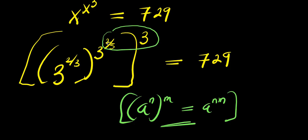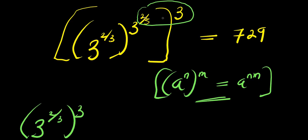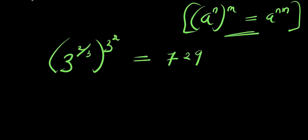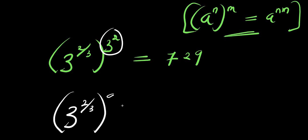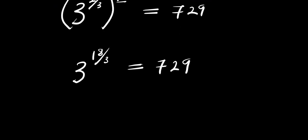Multiplying out: 3 times 2 is 6, divided by 3 is 2. So we have 3 to the power of 2 over 3, raised to the power of 3, giving 3 to the power of 6 divided by 3, which is 2. This equals 729. Then, 3 to the power of 2 over 3, raised to the power of 9: 9 times 2 is 18, divided by 3 is 6. So we have 3 to the power of 6 equals 729.